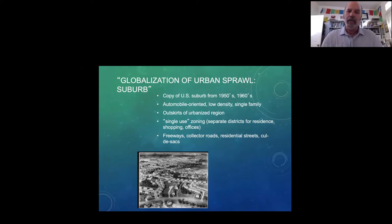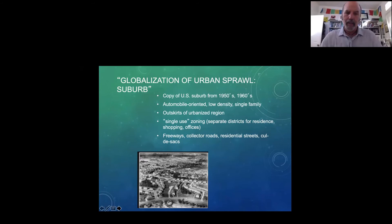Sprawl is defined as low density, very spread out or deconcentrated development over formal rural or peripheral areas. The overall settlement pattern is irregular, discontinuous, and dispersed — with either multiple centers or no centers — and defined by separation and distance between commercial, residential, and other land uses. That is the definition of sprawl.